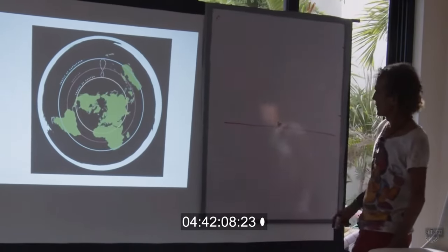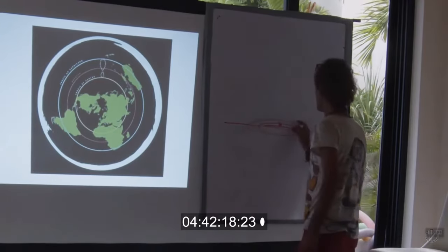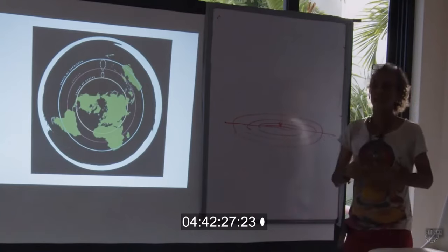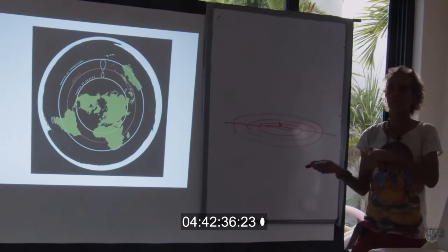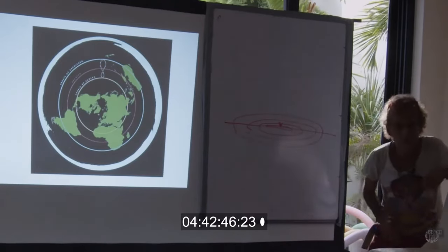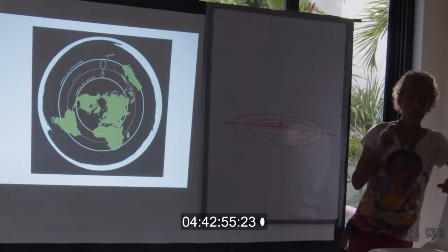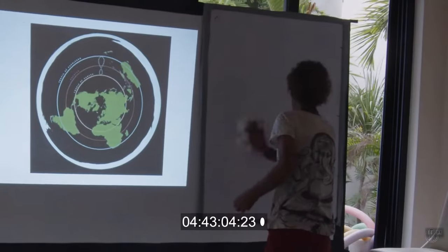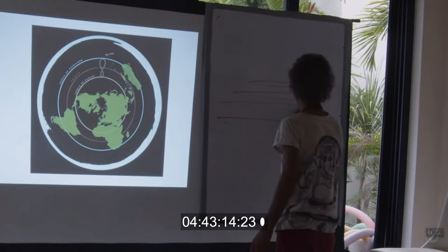There is the North Pole, here is the Arctic Circle, here is the Tropic of Cancer, here is the equator, here is the Tropic of Capricorn. This is what the Sun is doing.